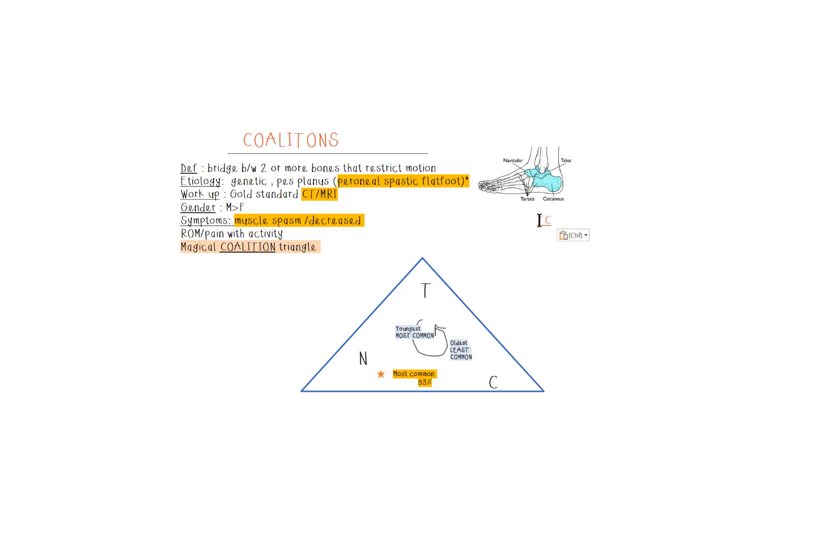Let's start with the talocalcaneal coalition, also abbreviated TC. One of the things I want you to remember is the age. This one is the oldest population, usually between the ages of 12 and 16 year olds.